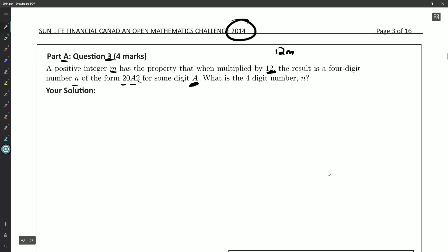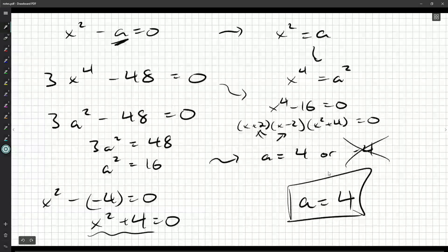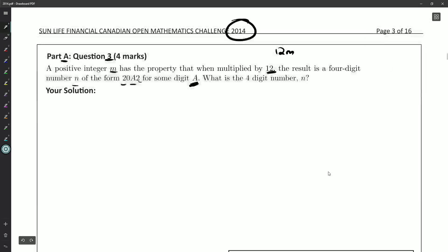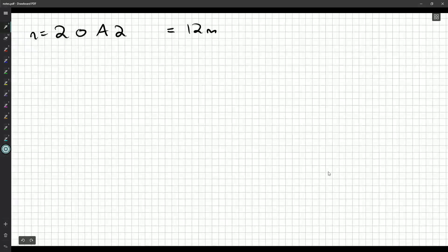So what this really amounts to is we need 2082 to be a multiple of 12. As long as we're reading it right, when it's multiplied by 12, the result is a four-digit number. So how can we figure out what A we should get to have a multiple of 12?